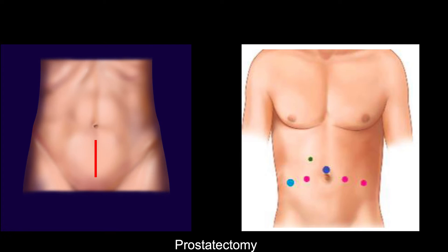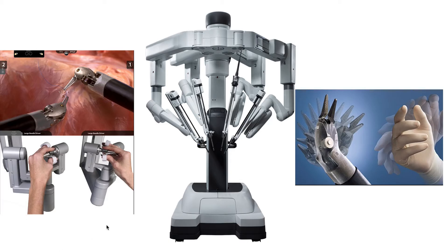During laparoscopic surgery, the assistant and the surgeon stand at the bedside and hold the instruments and the camera, which is placed into the patient, in order to perform the surgery. Laparoscopic surgery, however, can also be performed through the use of robotic assistance. The benefits of robotic assistance include the use of up to four instruments, including the camera, which is under direct control of the surgeon. In addition, the robotic approach allows for 3D visualization of the surgical field, as well as the use of jointed or wristed instruments, which provide seven degrees of freedom, most replicating the human wrist.